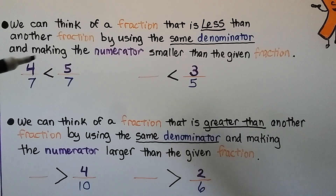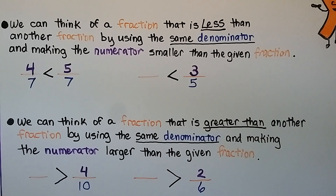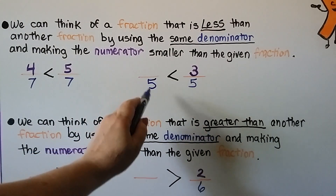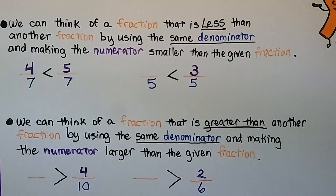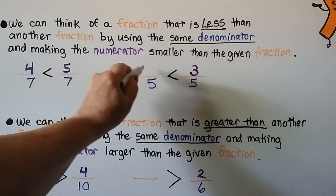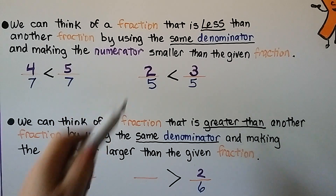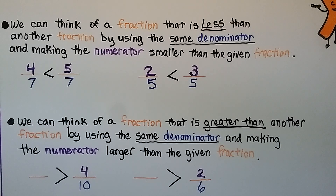We can put a 4 here — 4 is less than 5, so that would work. But we could also use 3 sevenths, 2 sevenths, 1 seventh, or 0 sevenths. For this one, the denominator is 5, so we make our fraction have a denominator of 5. Because it has to be less than 3 fifths, the numerator has to be less than 3 — we could put 2 fifths, 1 fifth, or 0 fifths.